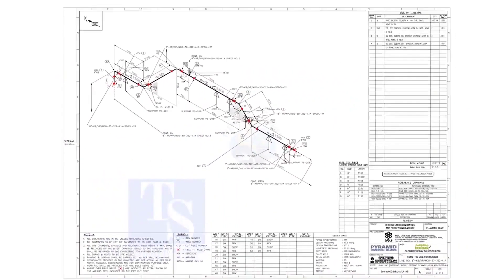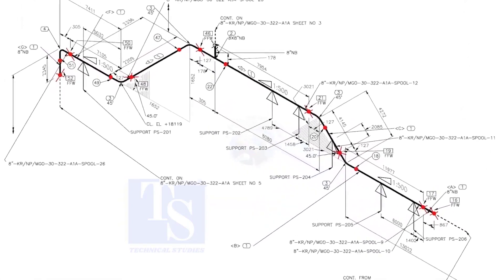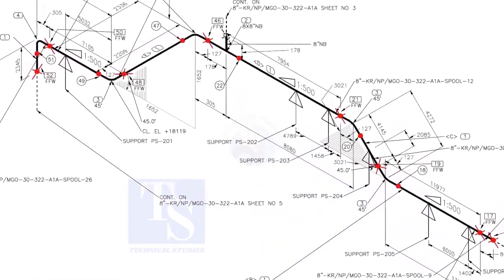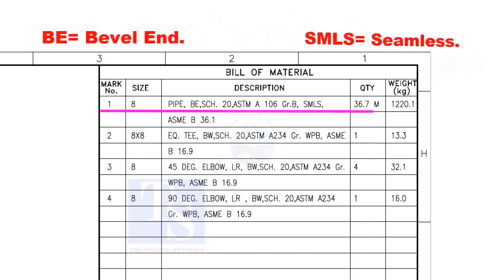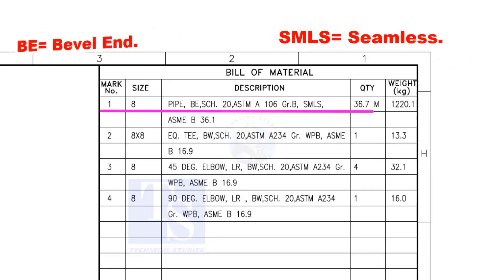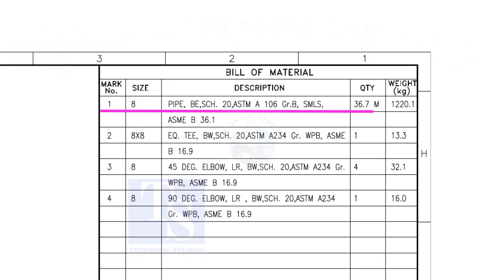Let us have some basic idea of the drawing. Item number 1 is an 8-inch pipe, bevel end, Schedule 20. SMLS stands for Seamless. Item number 2 is an equal tee, bevel end, Schedule 20.